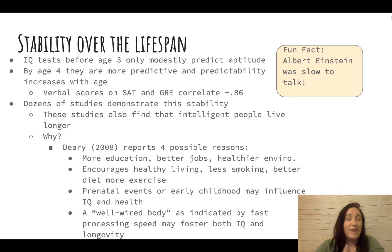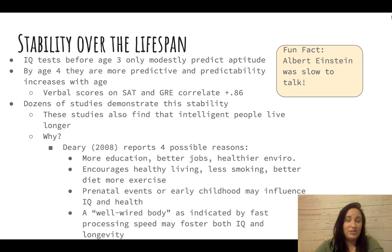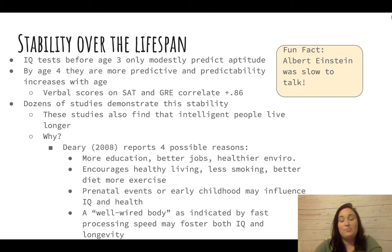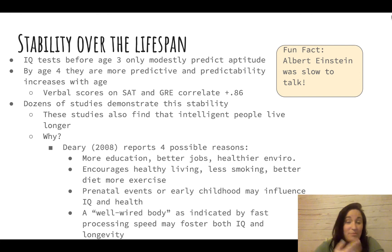Why do intelligent people live longer? Theories include: more education leads to better jobs and better access to healthcare; more time and resources to exercise, eat healthy, and live in healthier environments; they're less likely to smoke or engage in unhealthy behaviors; prenatal environments may also be a factor. Another theory simply suggests their brain — and perhaps their whole body — is just wired well.